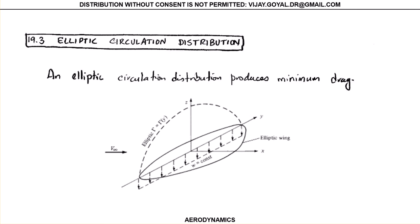We are down to the very last topic of the course and we're going to split it in two lectures. The first one is the lift of elliptic wings. When we talk about elliptic wings, we are talking about a wing that has an elliptic distribution. If you look at this drawing here, this represents the lift, and you can see that the whole lift is basically parabolic or elliptic in its nature.